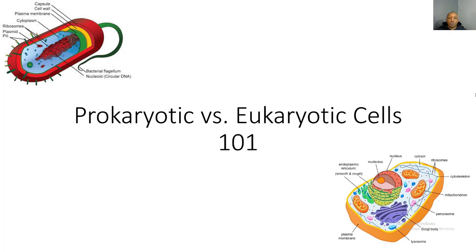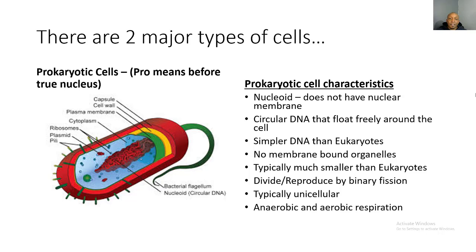Good evening ladies and gentlemen, we're back with another science tutorial video. In this video we're going to be looking at prokaryotic cells versus eukaryotic cells. There are two major types of cells: prokaryotic cells — where 'pro' means before a true nucleus — and eukaryotic cells. The biggest difference is that a prokaryotic cell doesn't have a true nucleus, while a eukaryotic cell does.